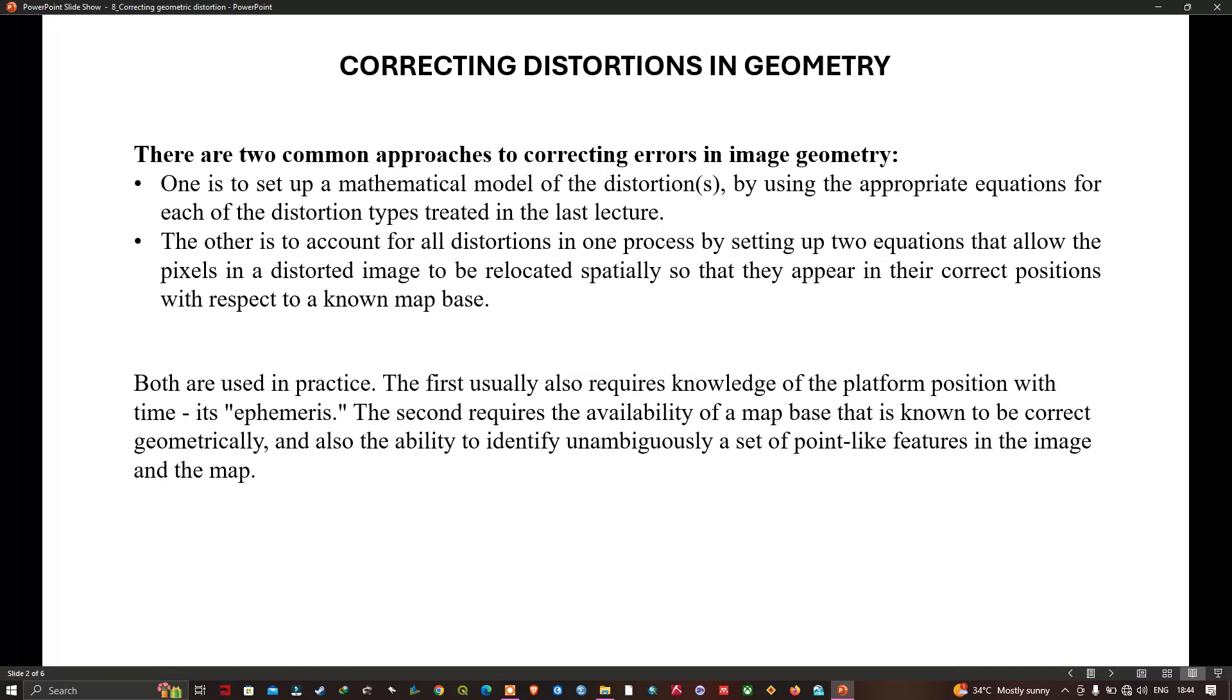It also depends on good knowledge of the platform's velocity, position, and pointing with time. The second method accounts for all sources of distortions in a single operation. It avoids the need to model mathematically the various types of distortion and instead uses a mathematical relationship between where pixels appear in an image and where they should appear in a map.